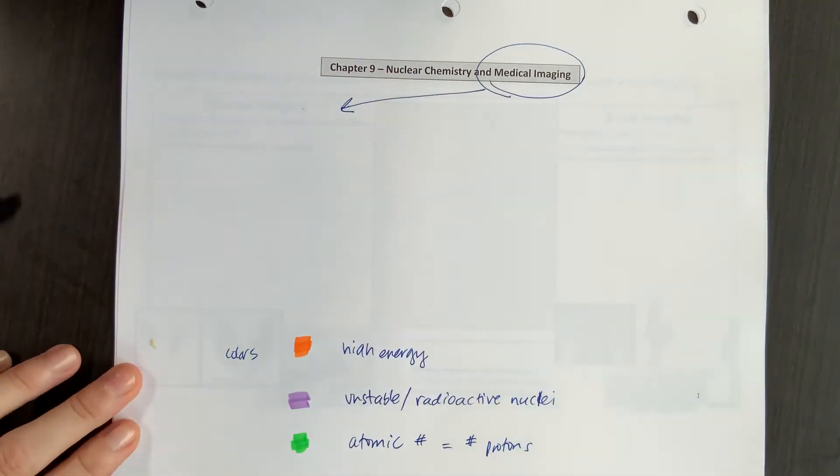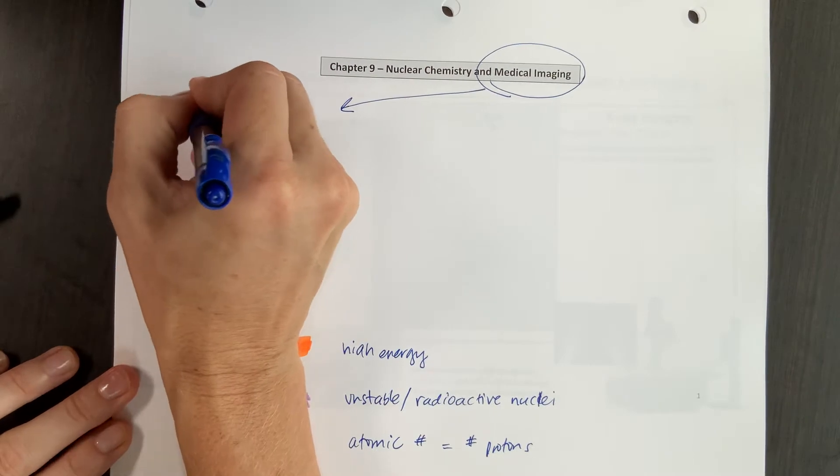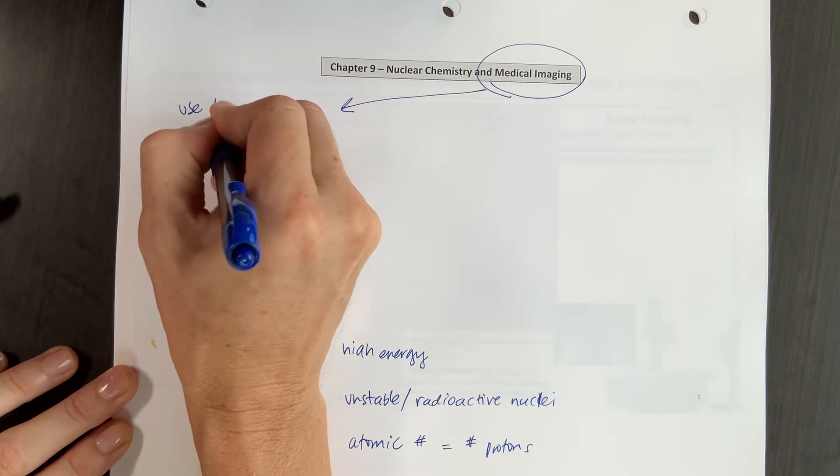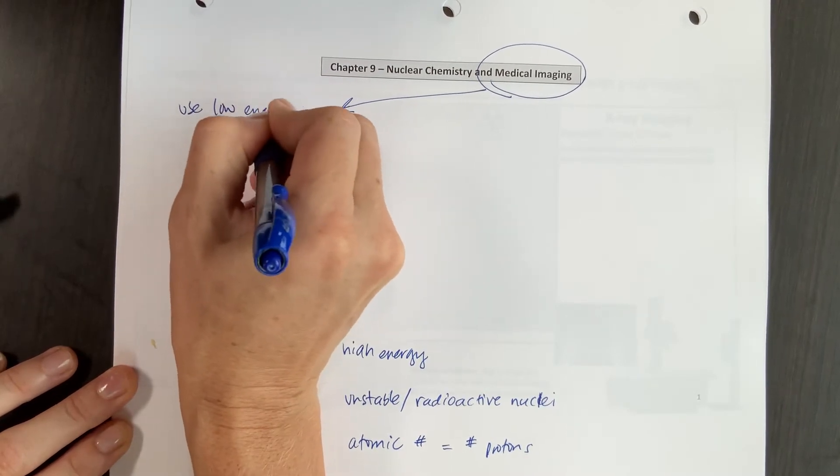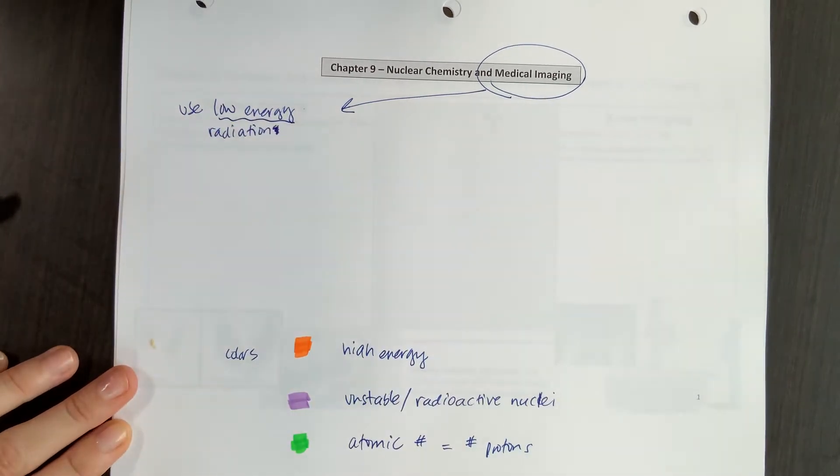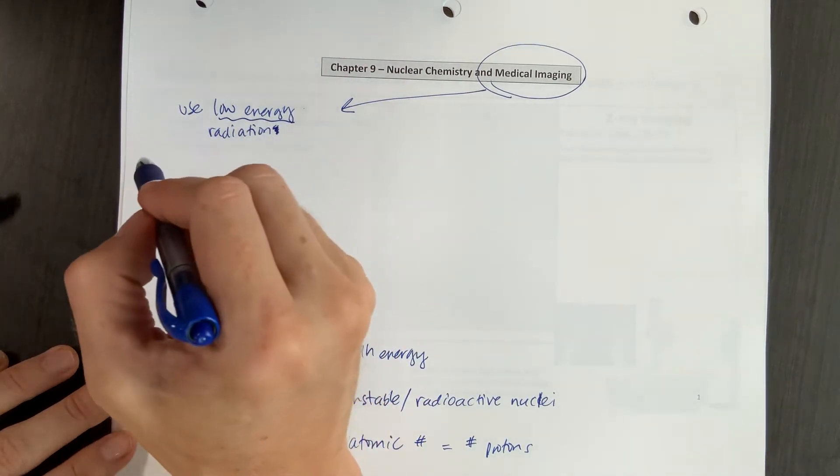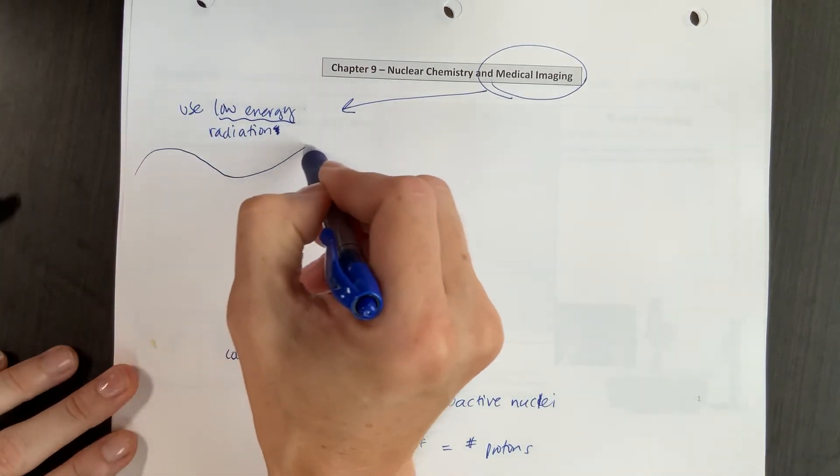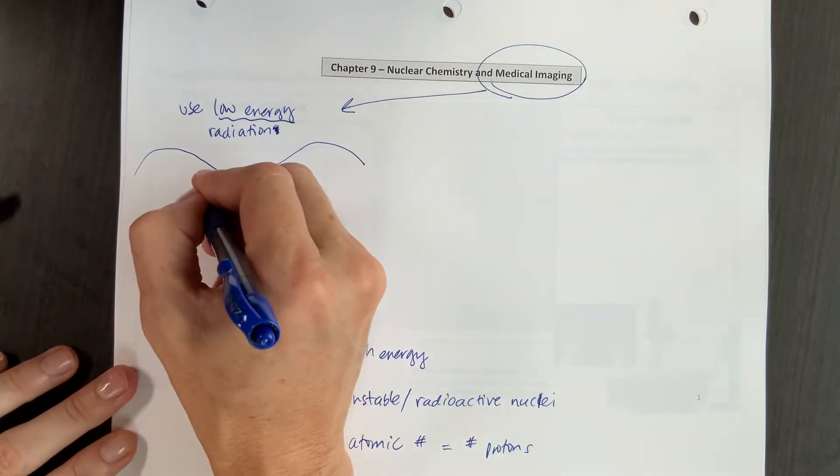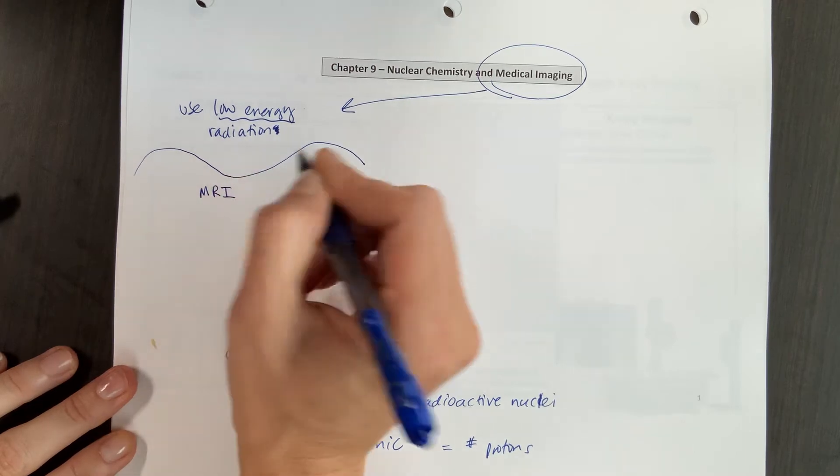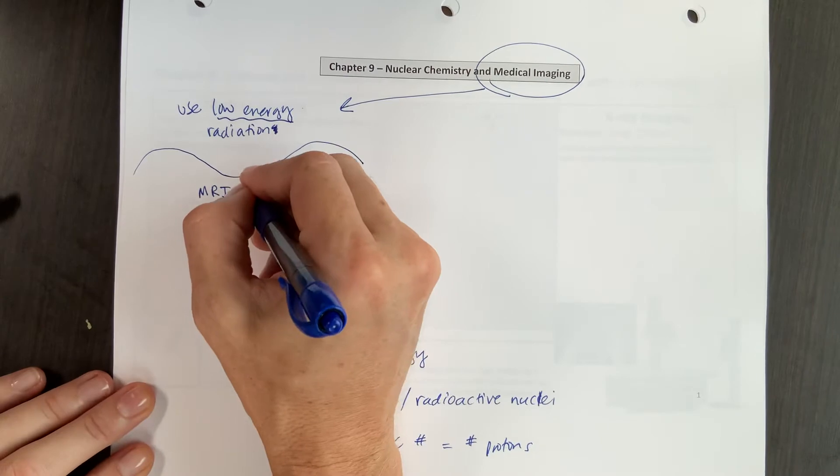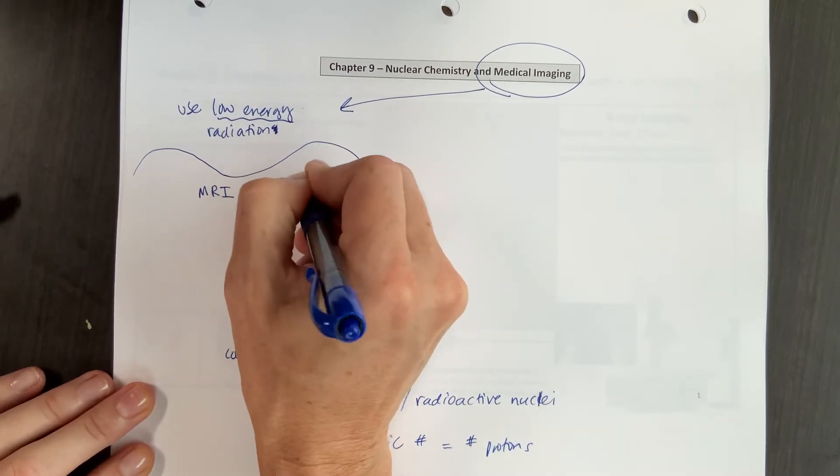One is to use low energy radiation. And we'll talk more about radiation through this chapter. But we want to use low energy radiation. That would be huge, long waves, like a radio wave. And the most common procedure for using this low energy radiation is MRIs. MRIs use radio waves.